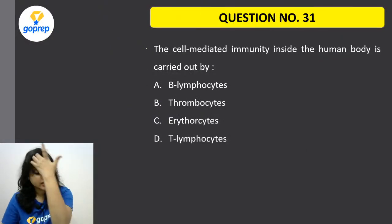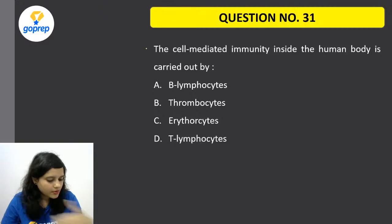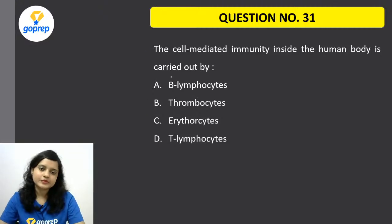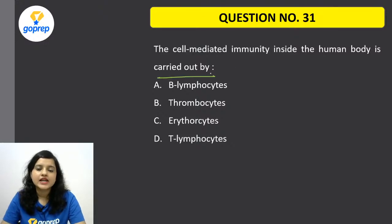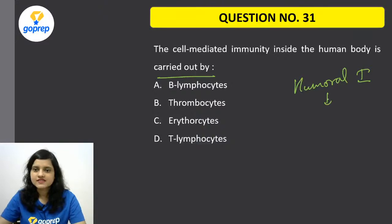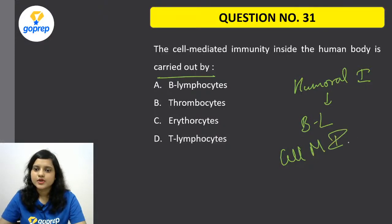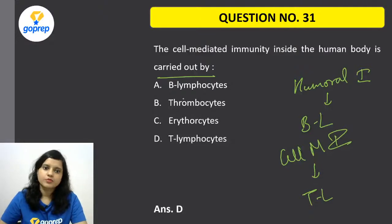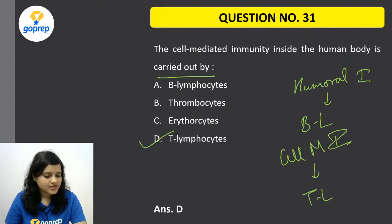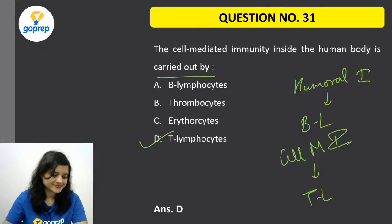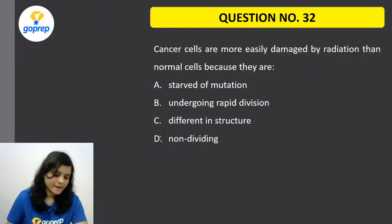Question number 31: The cell-mediated immunity inside the human body is carried out by? Remember — humoral immunity is due to B lymphocytes, and cell-mediated immunity is due to T lymphocytes. So the correct option is D — T lymphocytes.